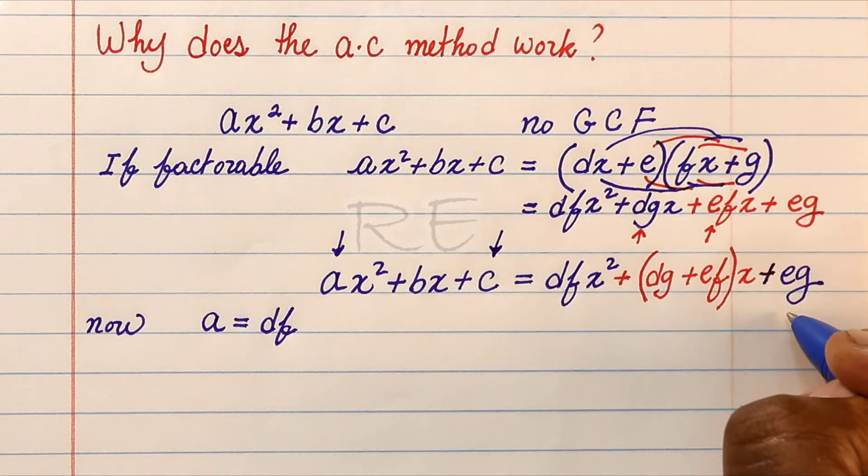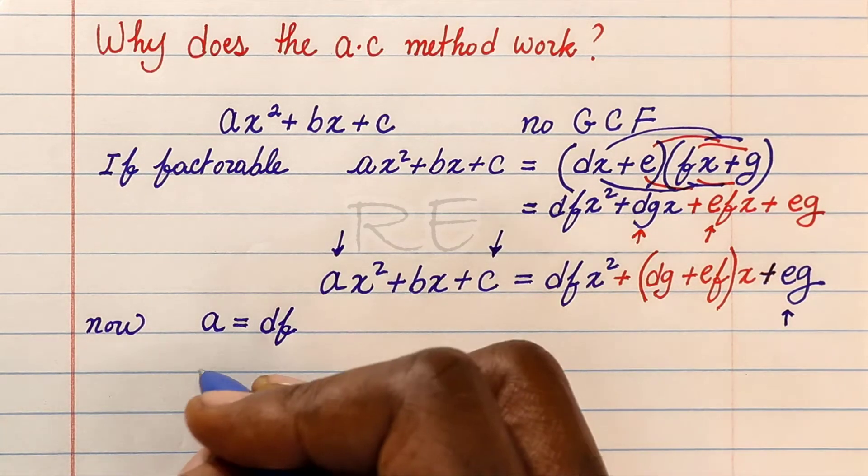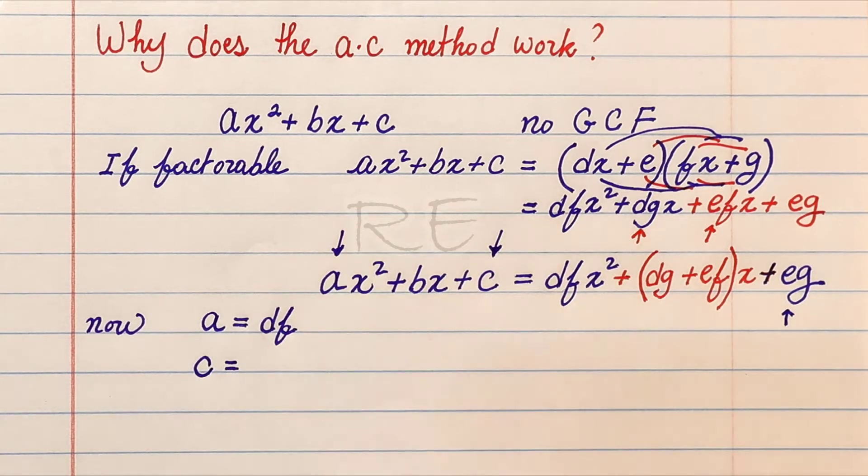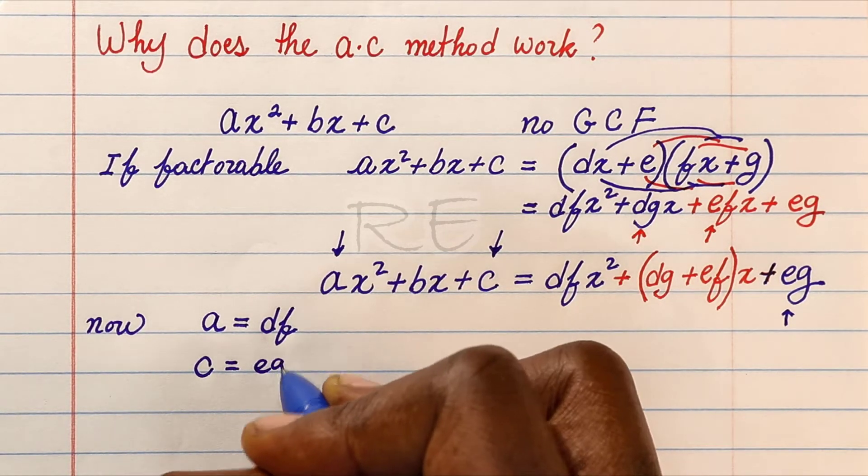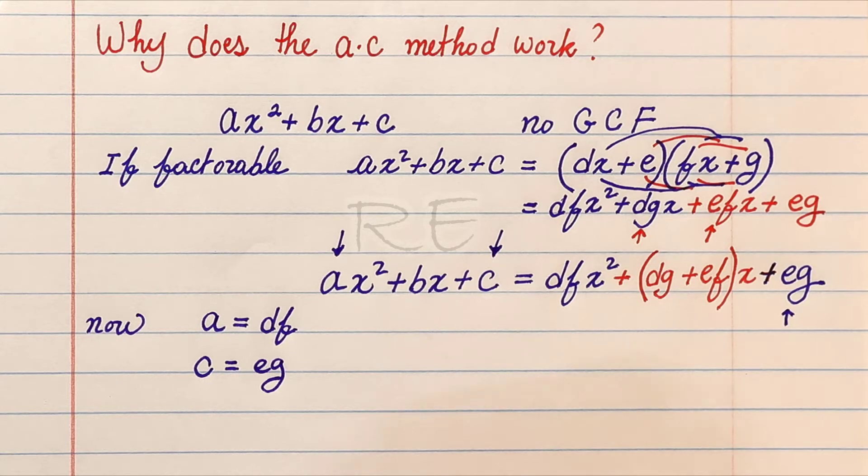The constant term c is equal to eg, the product of e by g.